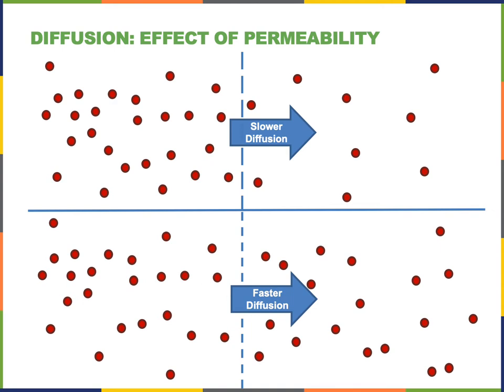The permeability of a barrier between two compartments can also influence the rate of diffusion. If there is a lower permeability — that is, if there are fewer spaces for the chemicals to move through — then there will be a slower rate of diffusion. In contrast, if we increase the permeability, the rate of diffusion will increase.